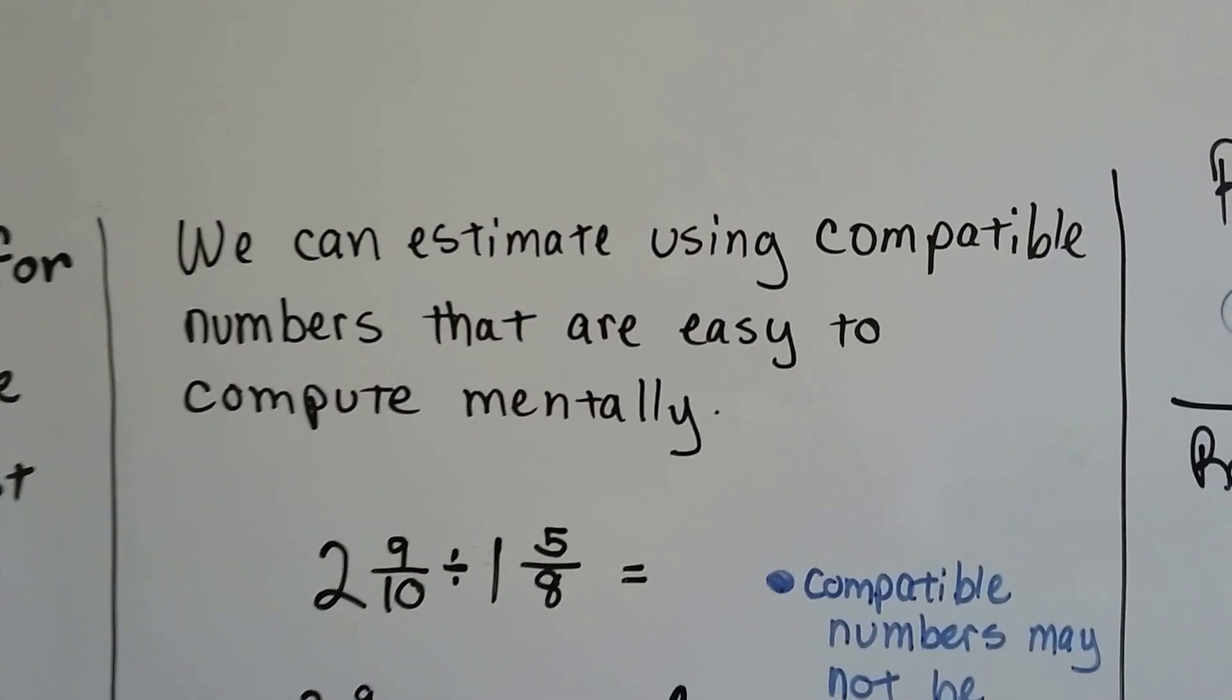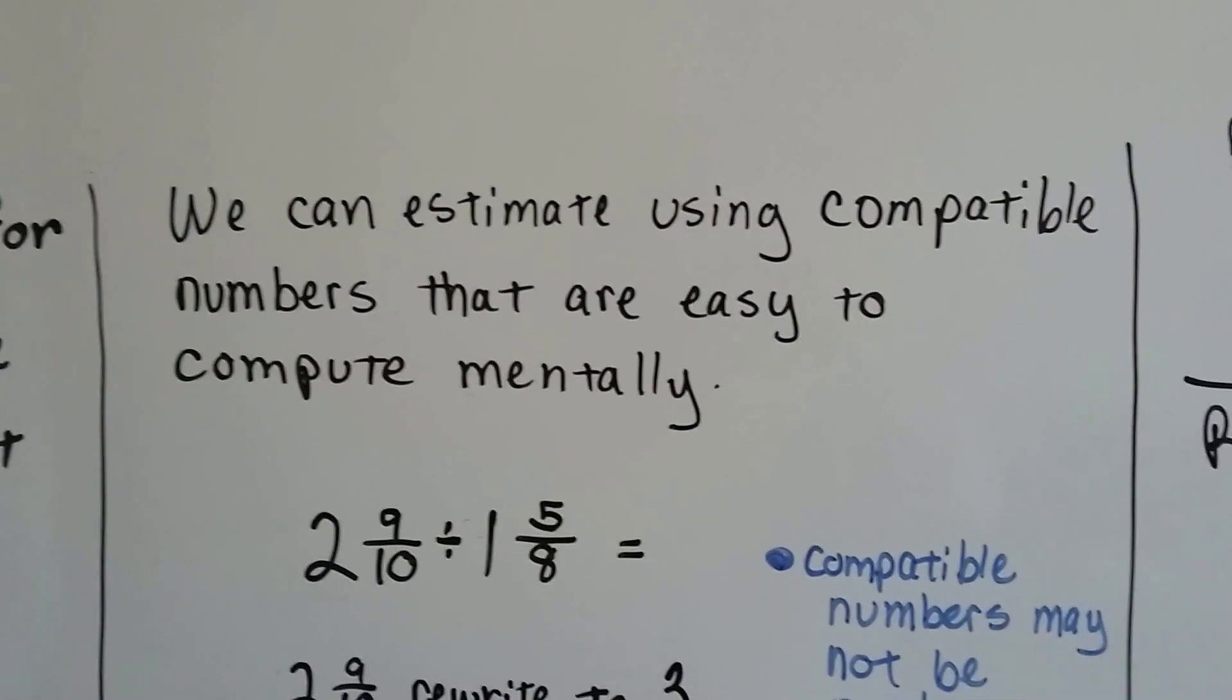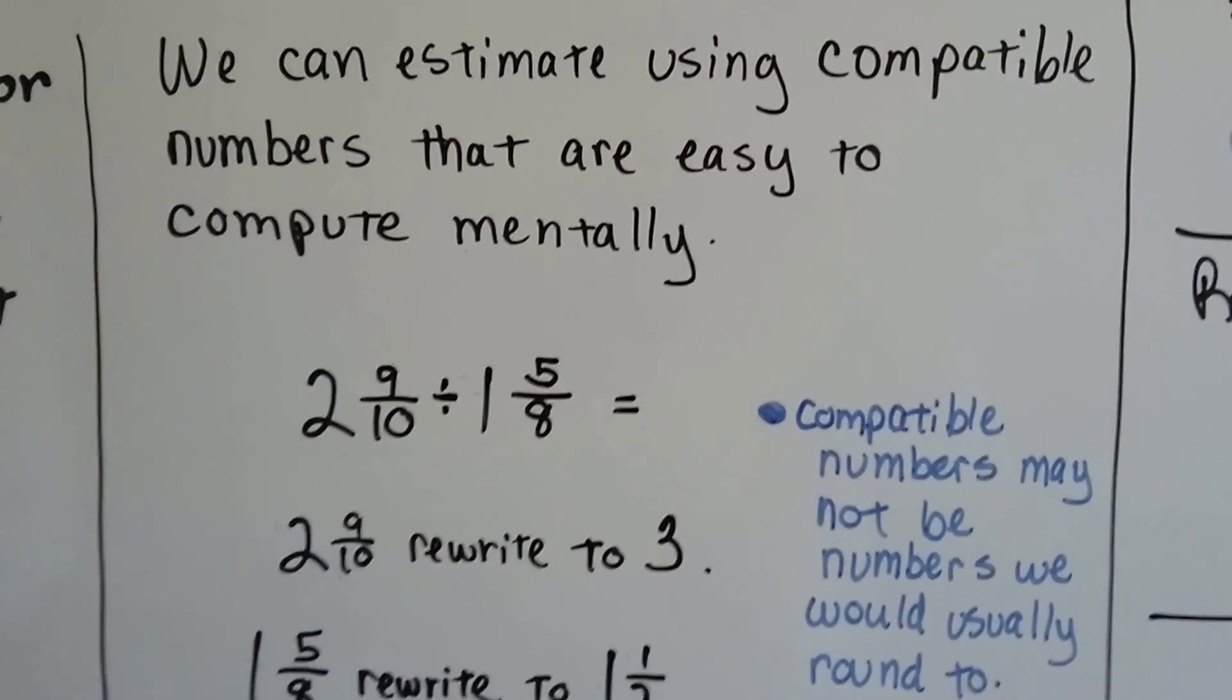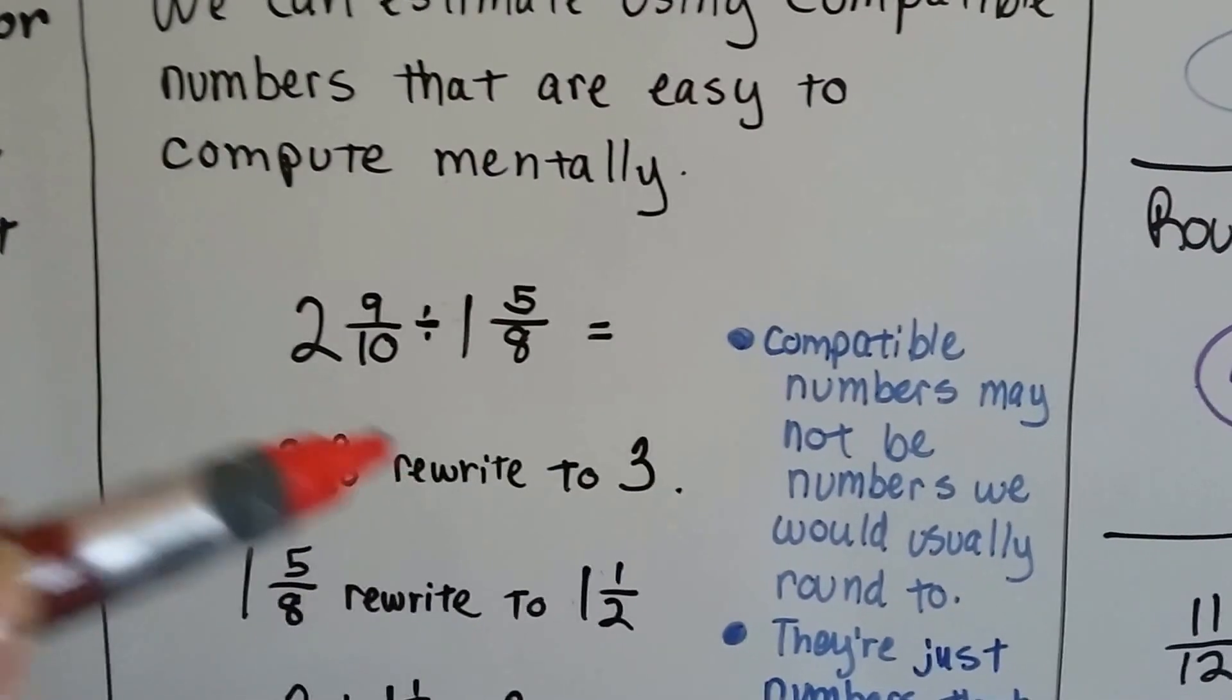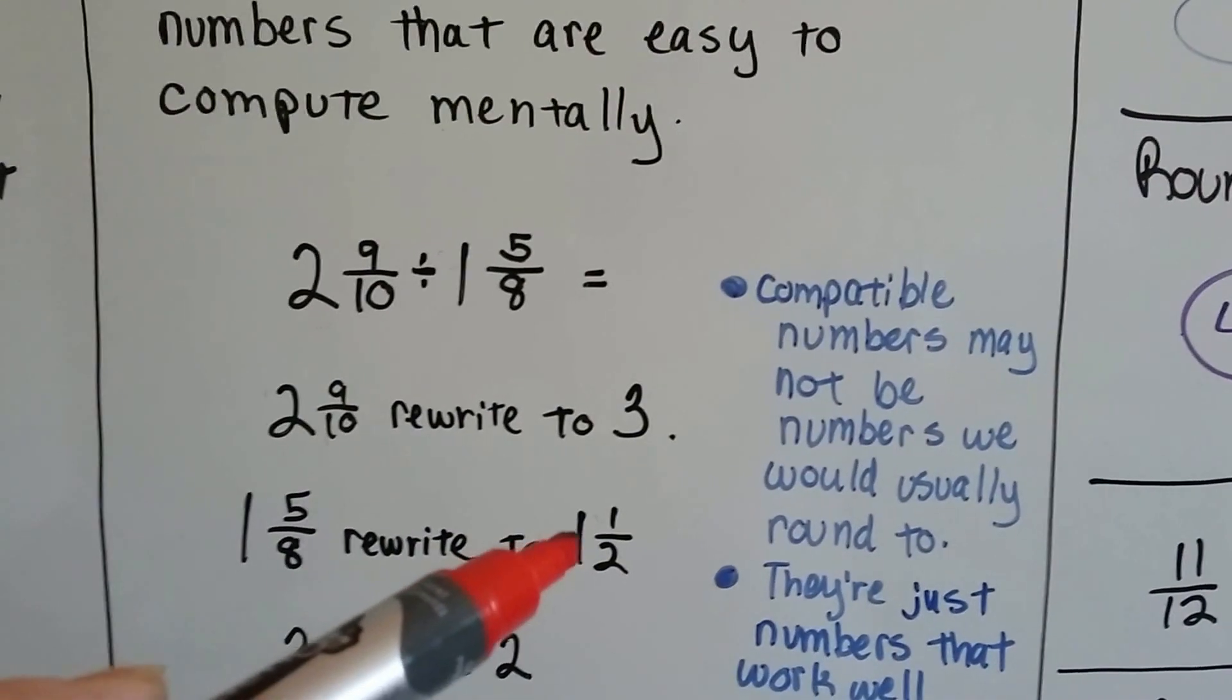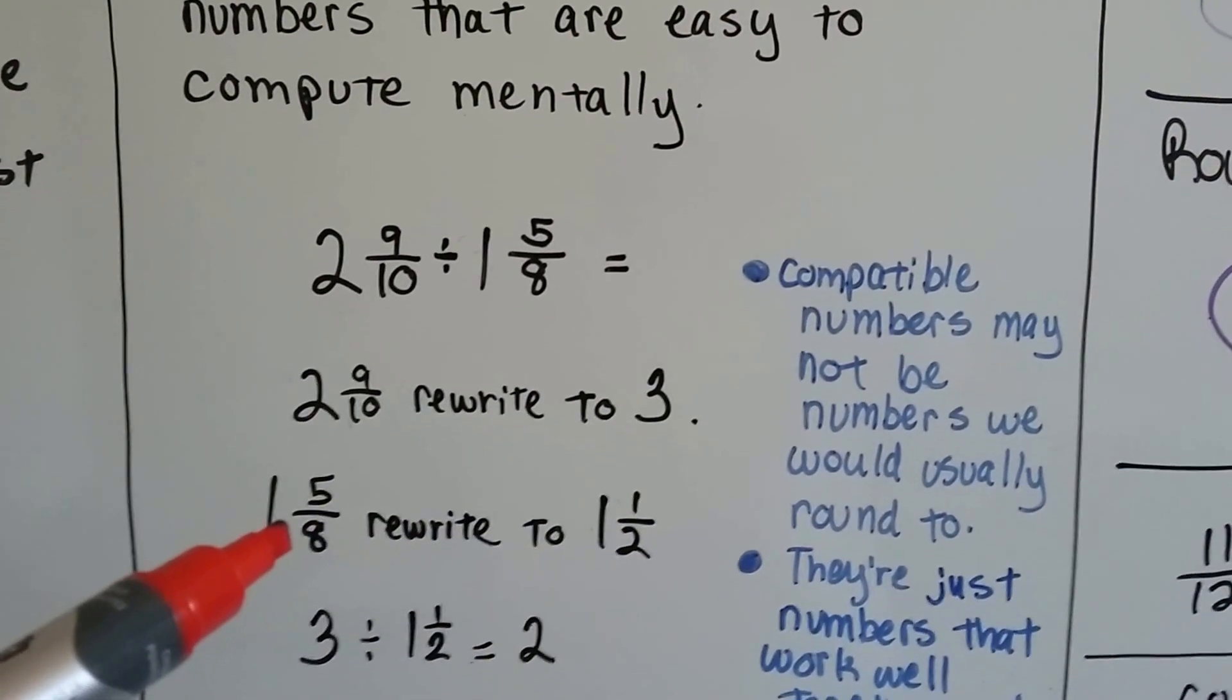We can estimate using compatible numbers that are easy to compute mentally. Two and nine-tenths divided by one and five-eighths. The two and nine-tenths can rewrite to three. The one and five-eighths can go to one and a half. Now why would I do that and not go to two?